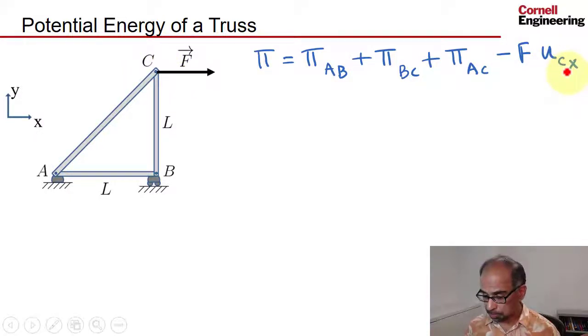Let's take a look at how this is written. The potential energy for BC is written in terms of the pin displacements. That's a key trick here—you have to write all these potential energies in terms of the pin displacements because that's the primary unknown.